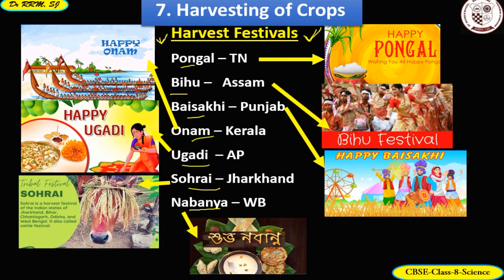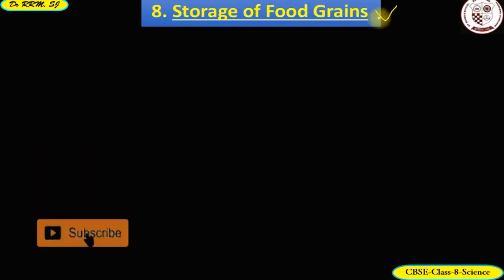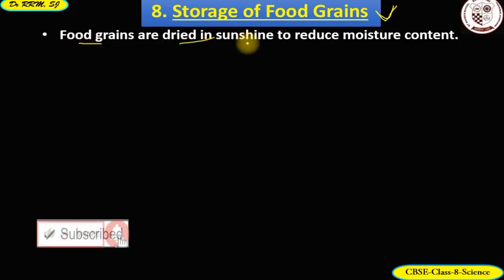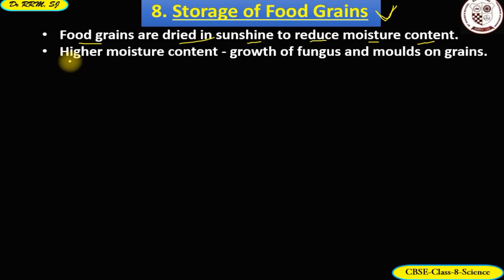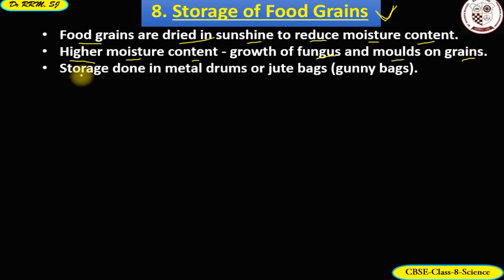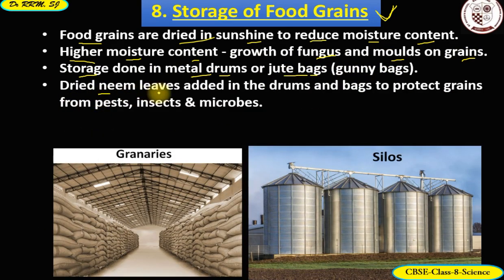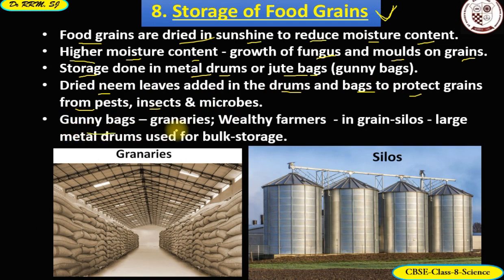After harvesting, food grains are dried in sunshine to reduce moisture content, because higher moisture promotes the growth of fungus and mold. Farmers store food grains in metal drums or jute bags (gunny bags). Dried neem leaves are added in the drums and gunny bags to protect grains from pests, insects, and microbes. The gunny bags are stored in granaries, while wealthy farmers store grains in grain silos — large metal drums used for bulk storage.